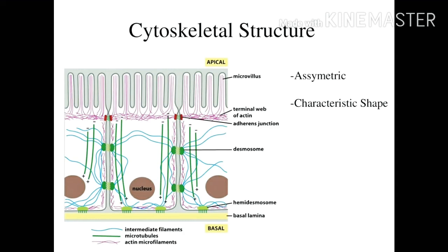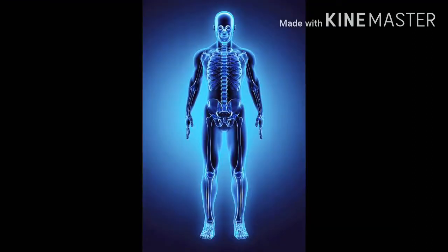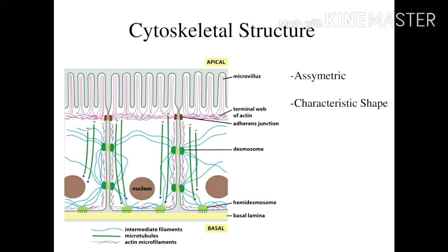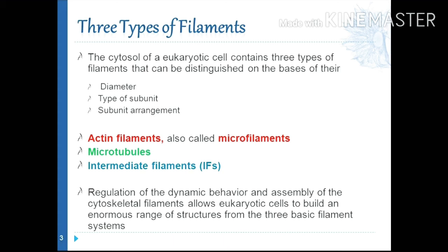As the name suggests, cytoskeleton means the skeletal structure present inside the cell. These cytoskeleton structures are small fibrous and tubular structures which form the structural framework inside the cell, similar to the skeleton structure of human beings — just as the skeleton forms the framework of a human body, similarly this cytoskeleton forms the framework inside the cell. These cytoskeleton structures occur only in eukaryotic cells; they are absent in prokaryotic cells. The cytoskeleton structures are of three types: microfilaments, intermediate filaments, and microtubules.